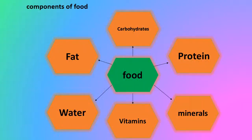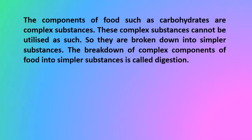In your previous class you studied the components of food. Food contains carbohydrates, proteins, minerals, vitamins, water, and fat. The components of food such as carbohydrates are complex substances that cannot be utilized as such, so they are broken down into simpler substances. The breakdown of complex components of food into simpler substances is called digestion.